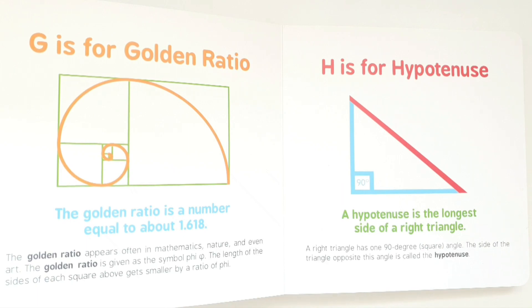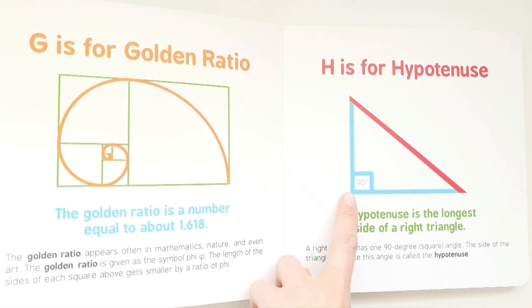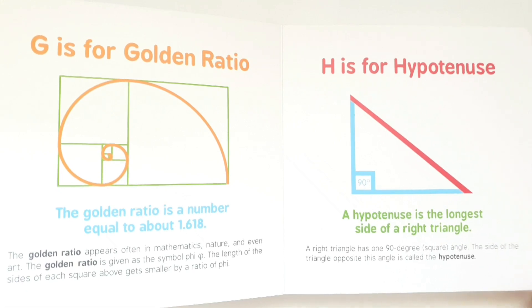H is for hypotenuse. A hypotenuse is the longer side of a right triangle. A right triangle has one 90-degree square angle. The side of the triangle opposite this angle is called the hypotenuse.